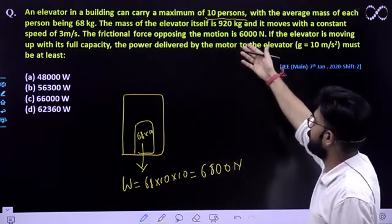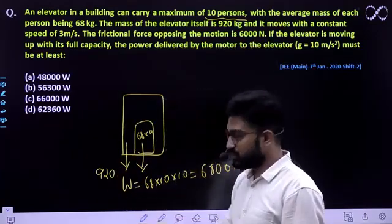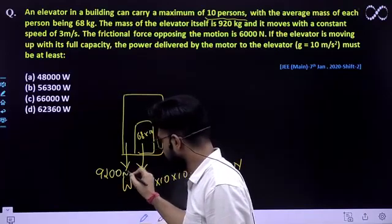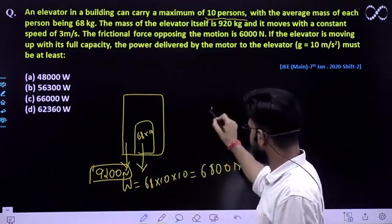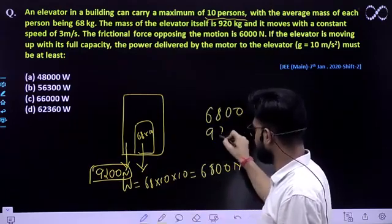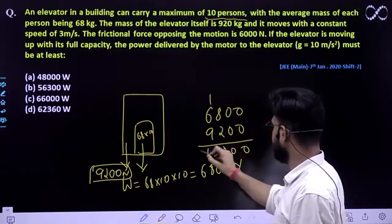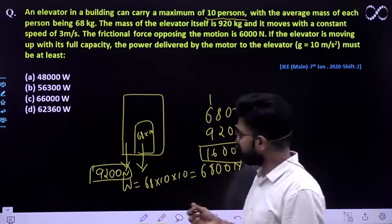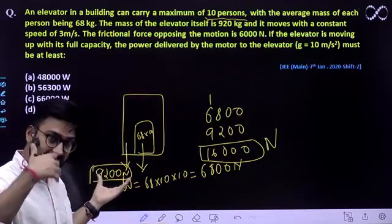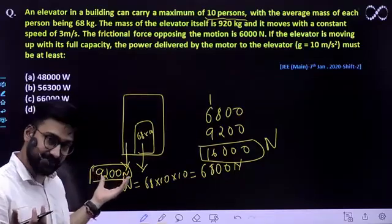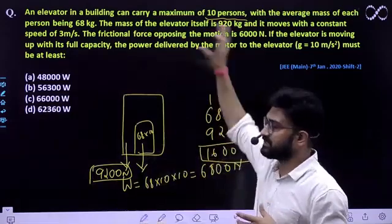The mass of elevator itself is 920 kg. So elevator's own mass, this lift's own mass is also 920 kg. So multiply by 10, you will be getting weight of elevator. So total weight that this lift can carry would be 6800 plus 9200. So it would be equal to 16,000 newton is the maximum weight that it can lift, because it can lift maximum 10 persons. Plus lift's own weight is also around 9200. So both combined weight is equal to 16,000 newton.